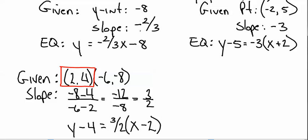So those are three of the types of problems you're going to get today: you're going to be given the y-intercept and the slope, you're going to be given a point and the slope, and you're going to be given two points. You've got to write the equation for the line.